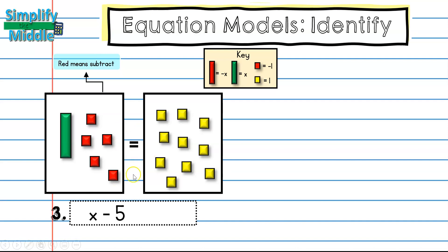It tells me the equal sign is here. And on this side, I just need to count up my individual 1 tiles. So I have 1, 2, 3, 4, 5, 6, 7, 8, 9, 10. So my equation is x minus 5 equals 10.